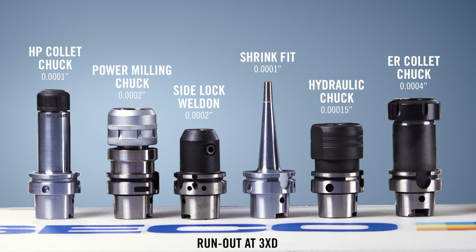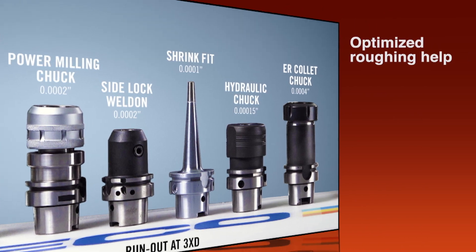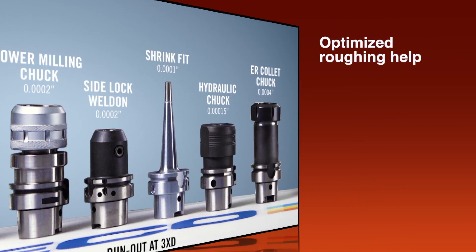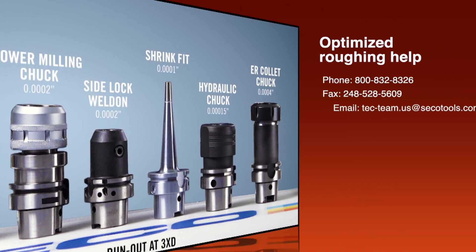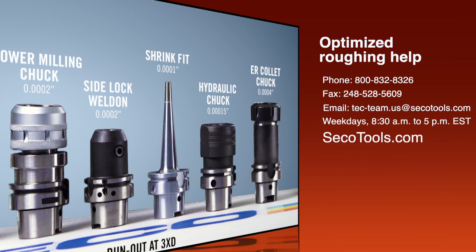Hydraulic holders, as long as they're heavy-duty reinforced and again have anti-pull-out, are going to be beneficial. Also, manufacturers that make side-lock holders — the traditional Weldon-style holders that a lot of us are used to in the machining world — those are now being machined more accurately. So they give you 100% pull-out reduction but also give you the ability to have good run-out. Again, less than four tenths and you're going to have optimal tool life when you're looking at optimized roughing.